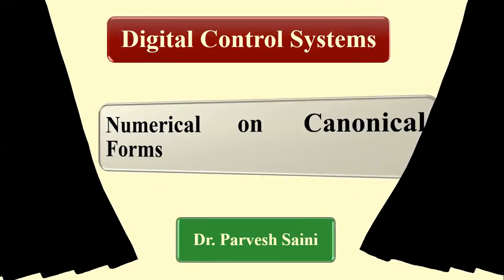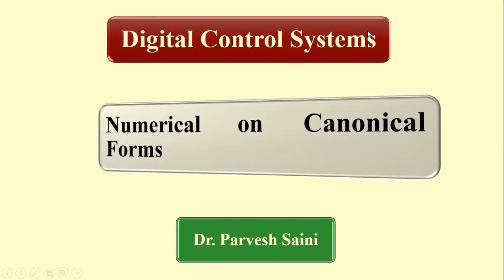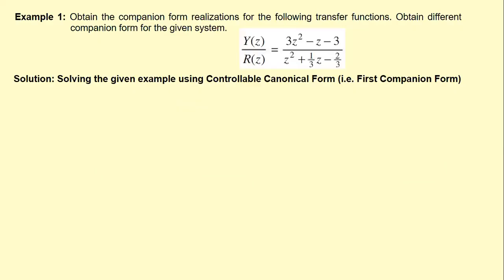In this lecture we will discuss some numericals related to conversion of a transfer function to a particular canonical form. We have to obtain the companion forms of the given transfer function, and we have to obtain the different companion forms.